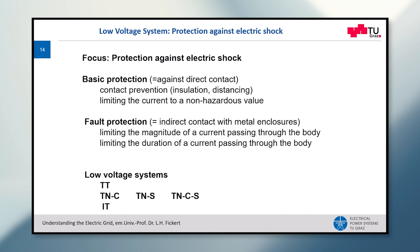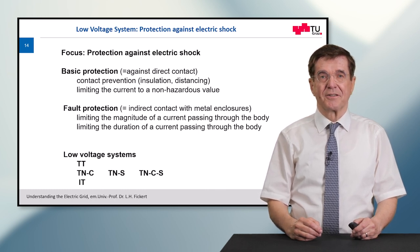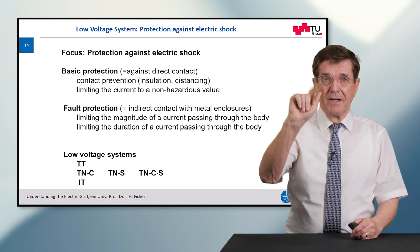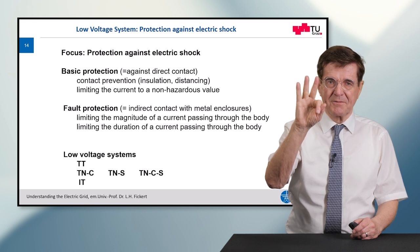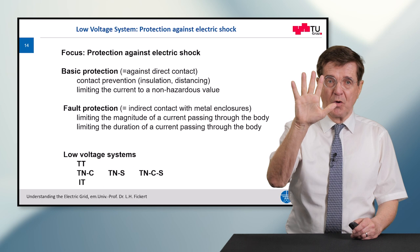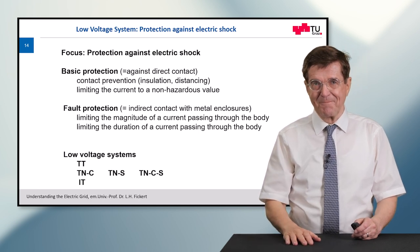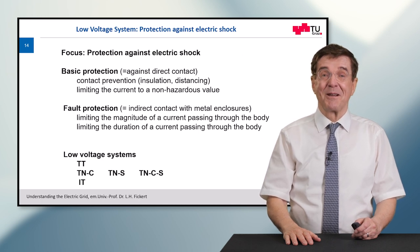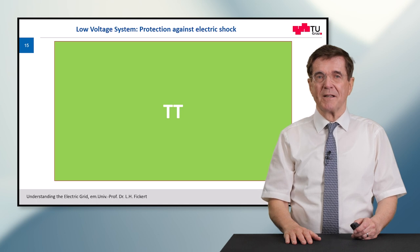There is basic protection, which simply means preventing direct contact at all — for example by insulation distances as is done in overhead lines; you cannot touch an overhead line just like that. The second one, which is the focus of what comes now, is fault protection: protection in the case of indirect contact with metal enclosures. We can limit the current and we can limit the duration of such a current. To guarantee this fault protection we have five low voltage systems: TT, TNC, TNS, TNC-S, and the IT system.